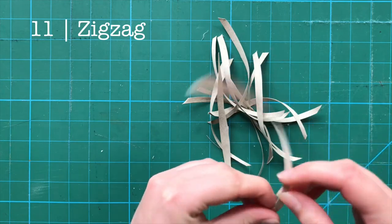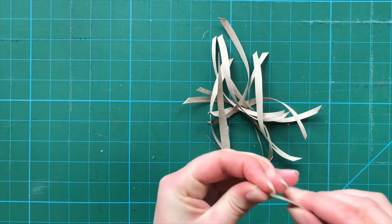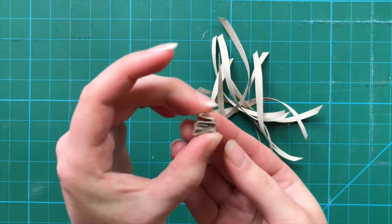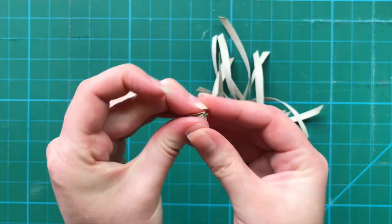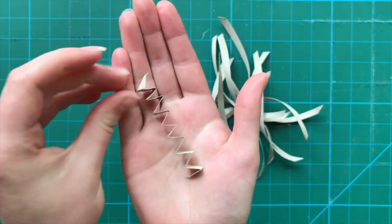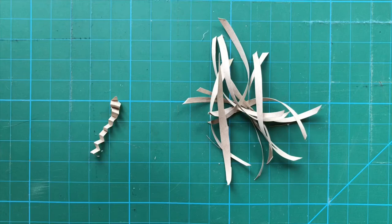Number 11, zigzag. If you take a single strip, you can fold it back and forth tightly over itself. You can press it once to help it hold its shape. Then once released, it becomes a zigzag. This can be used in the same ways as all the other strips, only it's a bit more interesting and offers some new shapes.